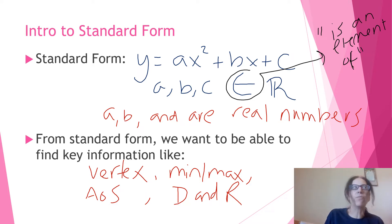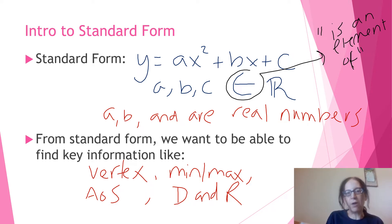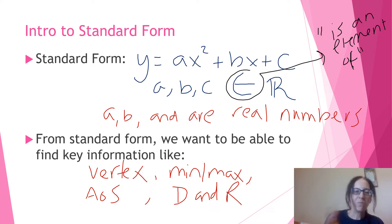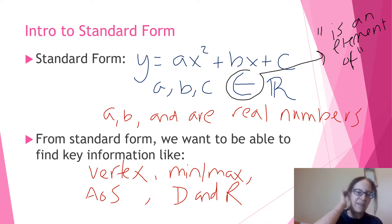You probably recognize standard form from using the quadratic formula — the opposite of b plus or minus the square root of b squared minus 4ac, all over 2a. My ninth grade math teacher made me memorize that and it just stuck.